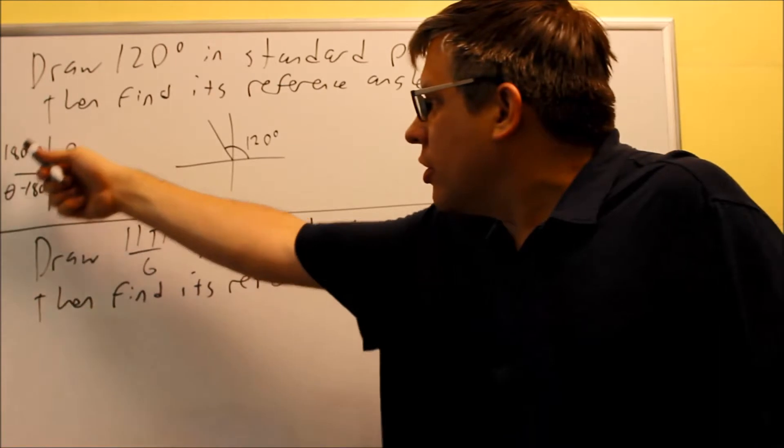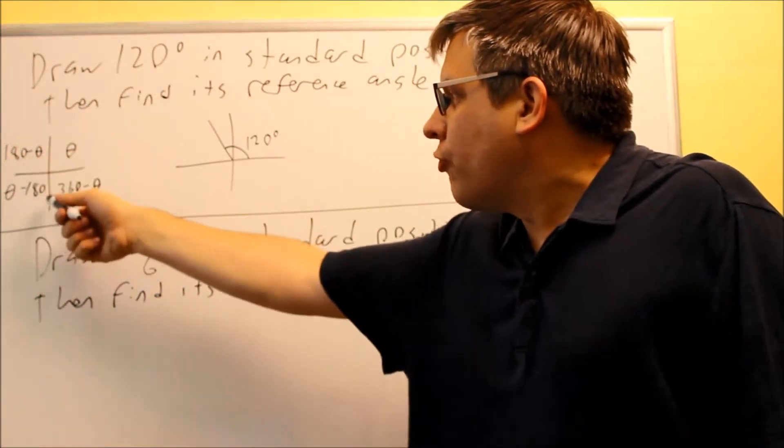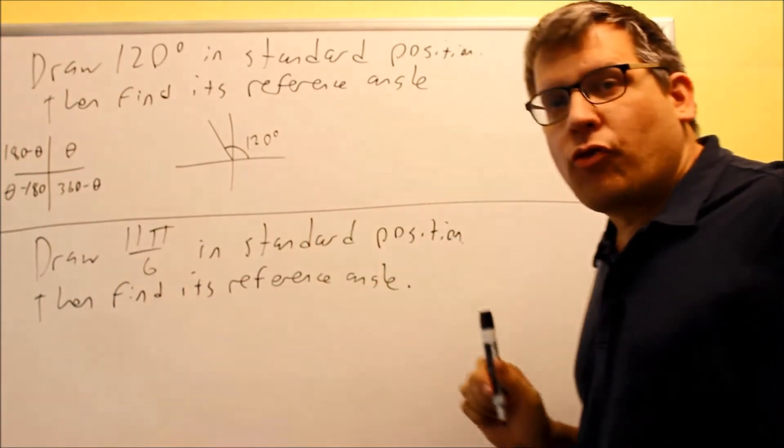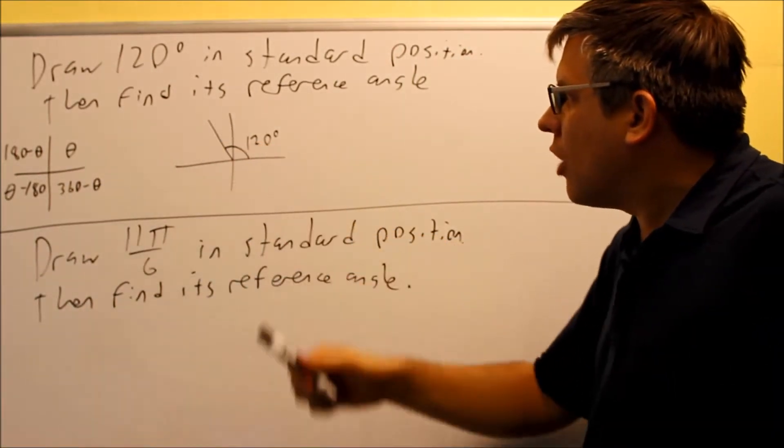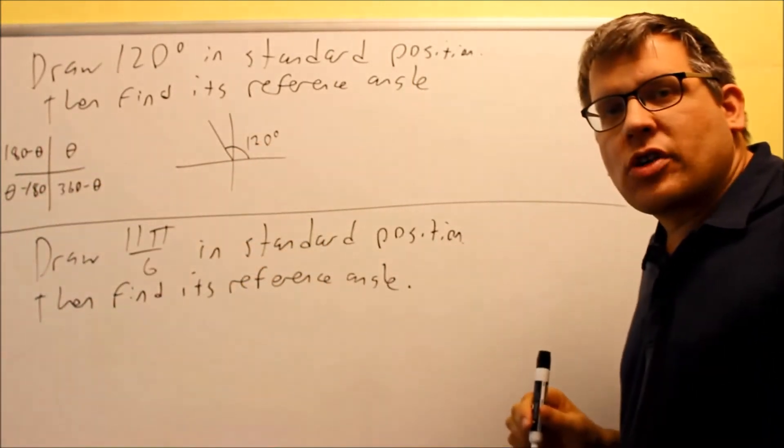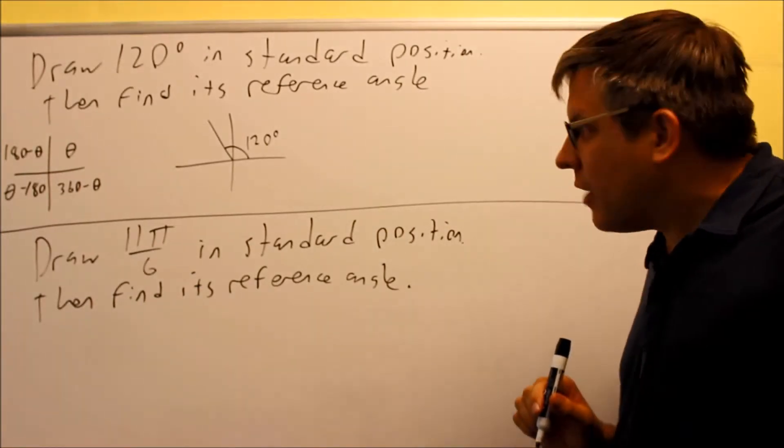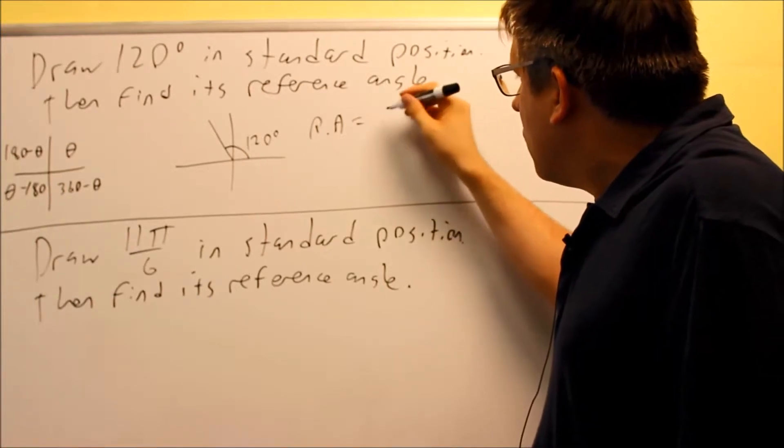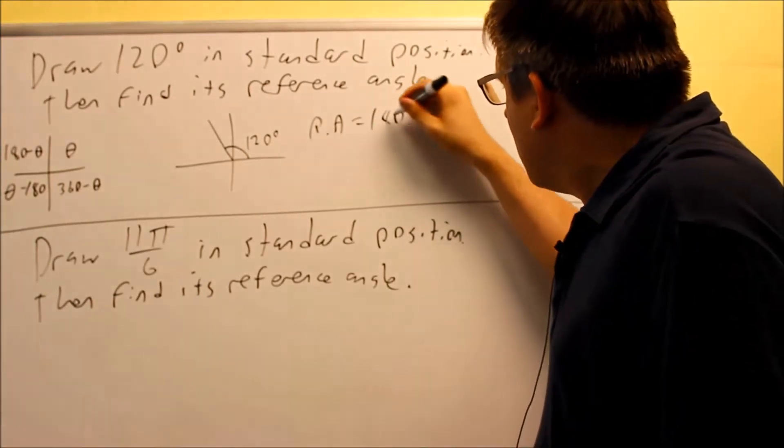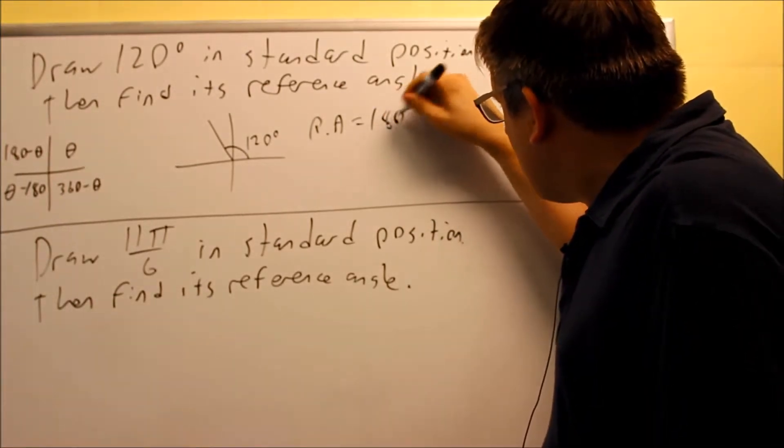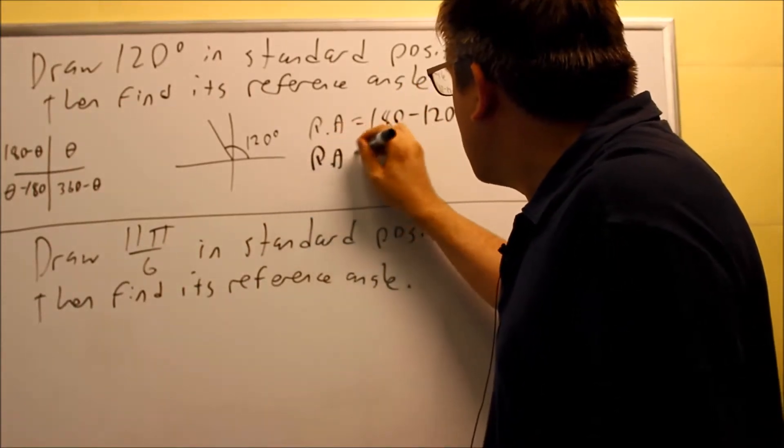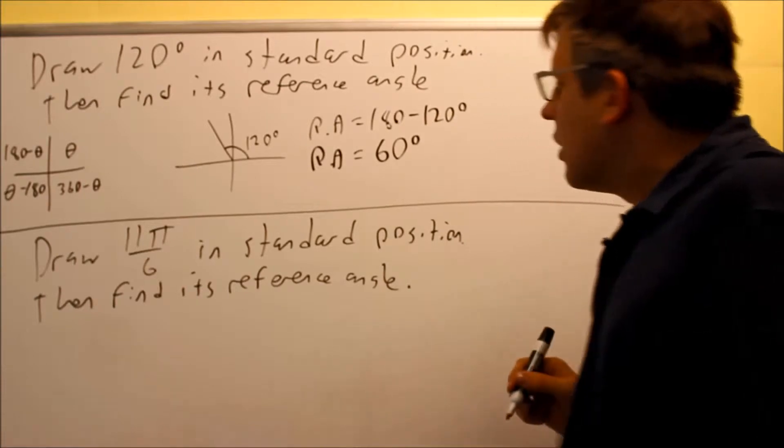Because that would tell you which quadrant you're in, and here refer to the formula I had on the board previously that gave the reference angle formulas. You're in the second quadrant, which means that the reference angle formula you want to use is 180 minus theta. So my RA is equal to, reference angle is the formula 180, 180, and that's going to be minus theta, so minus 120, which means that your reference angle is going to be equal to 60 degrees.